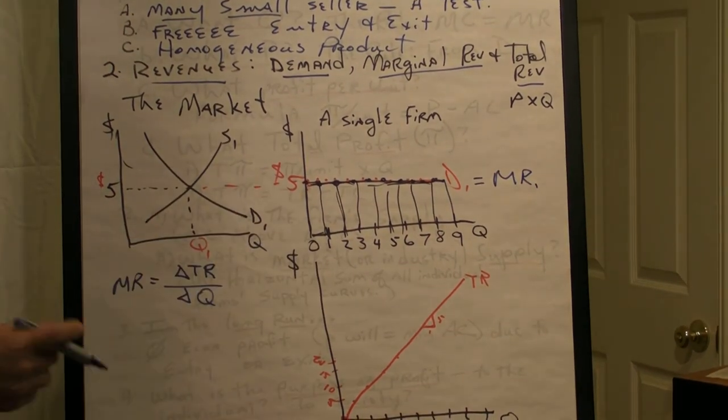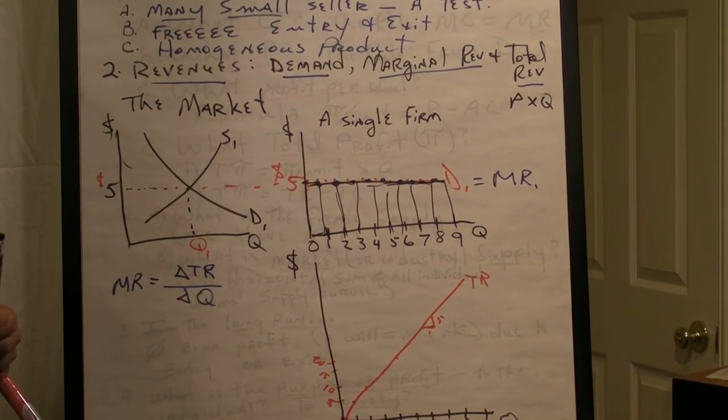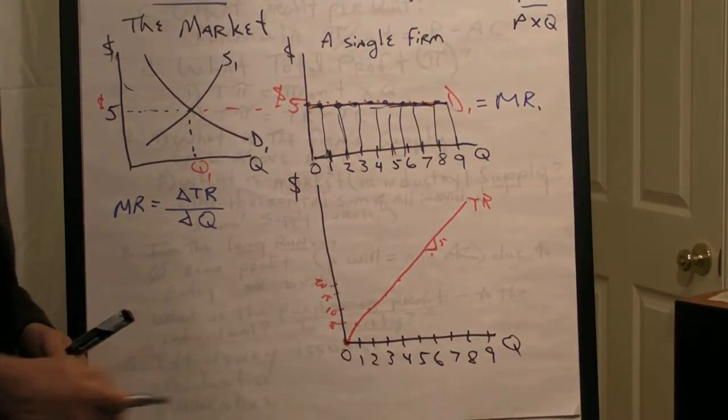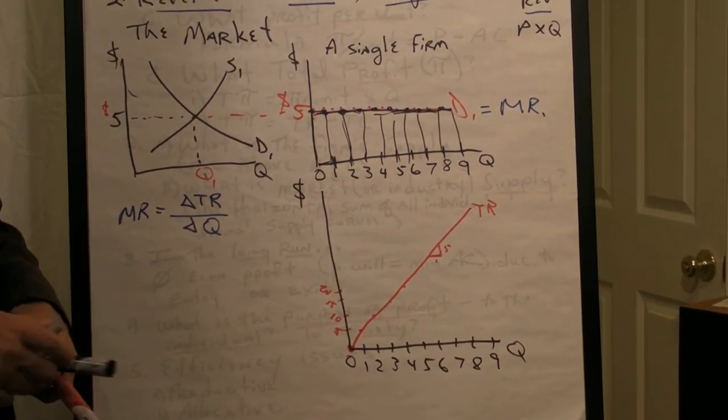So demand, price, and marginal revenue are all the same to a price taker, and the total revenue is a straight line, the slope of which is the price.